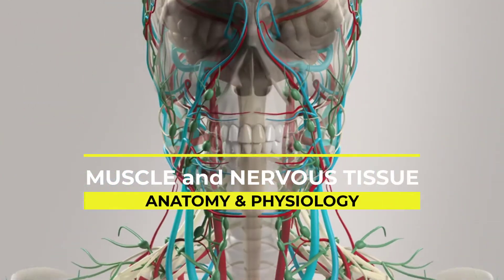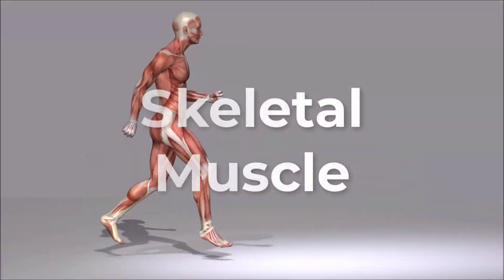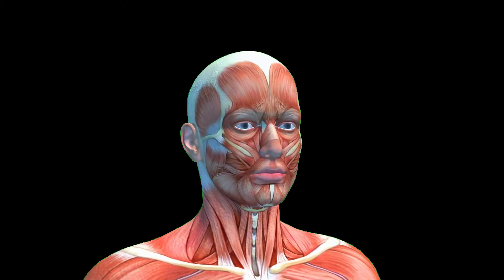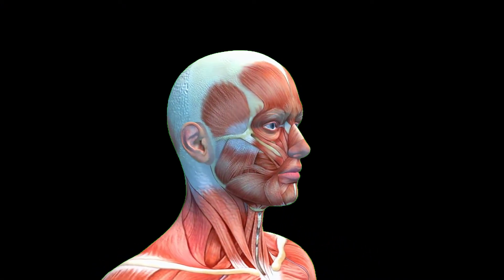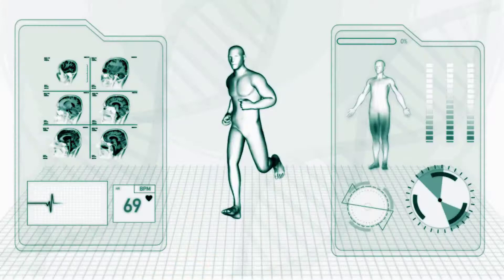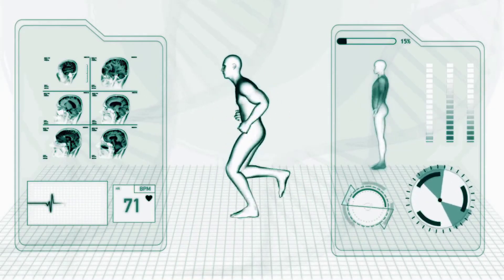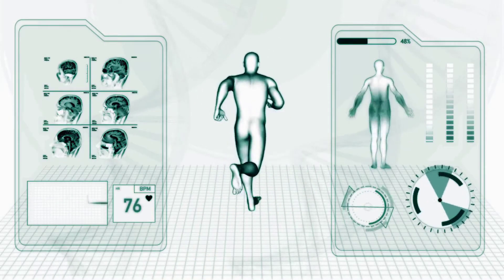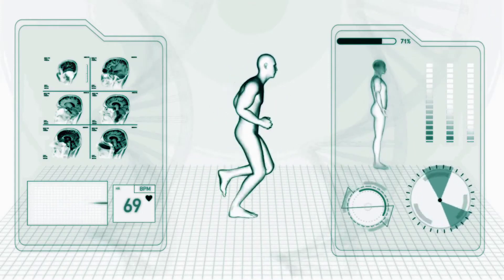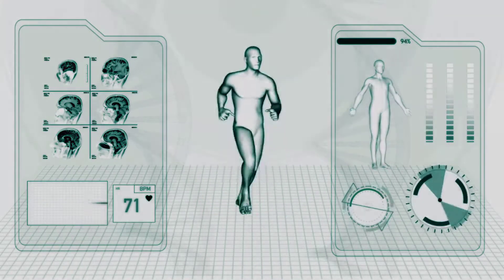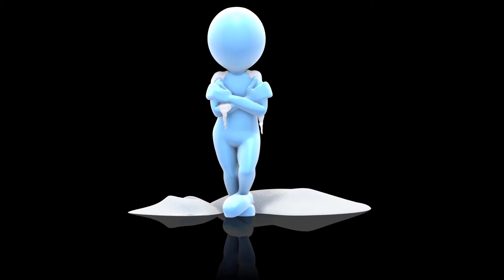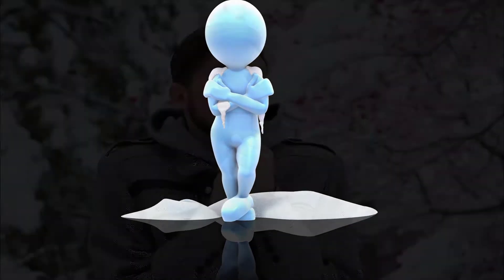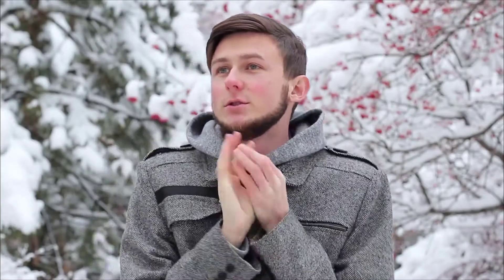Skeletal muscle attaches to bones, allowing for voluntary movements of the body. 40% of your body mass is made up of skeletal muscle. Skeletal muscles generate heat as a byproduct of their contraction, and thus participate in thermal homeostasis. For example, shivering is an involuntary contraction of skeletal muscle in response to a perceived lower than normal body temperature.